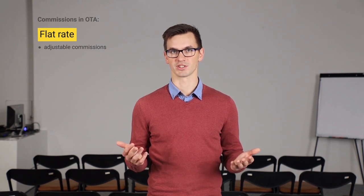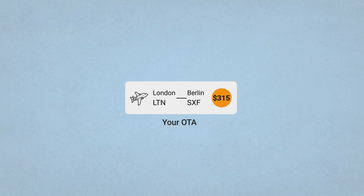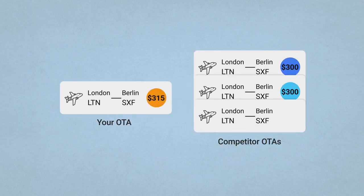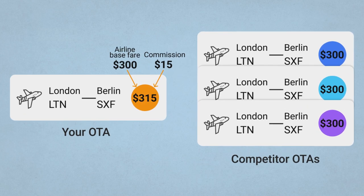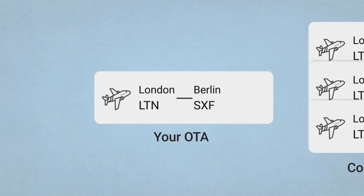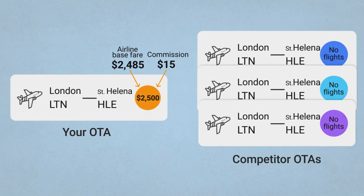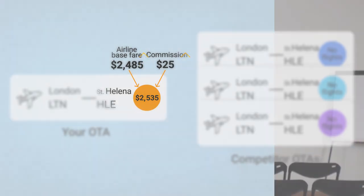And if you aren't flexible, you can't win the competition. For example, you sell a direct flight from London to Berlin, and all your competitor OTAs have the very same flight for $300. If your flat rate makes it $315, you aren't going to win this deal and you want your commissions to be lower. But if you sell a complex itinerary from London to St. Helena and nobody else has it, you want your commissions to be higher.